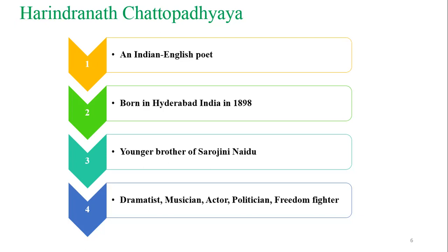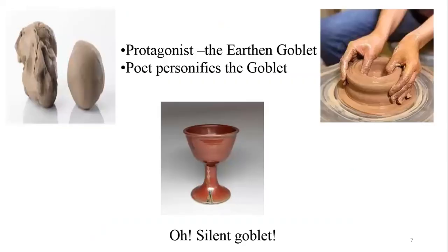He wrote this poem taking the earthen goblet as the protagonist. The goblet is the protagonist of the poem — he personifies the goblet here. The poet respects the goblet as an individual. Earlier it was a lump of clay; now it has a new shape and the writer has given it an identity and due recognition.